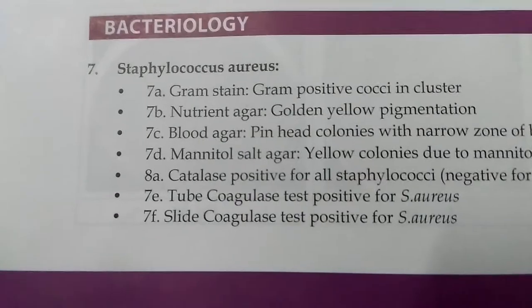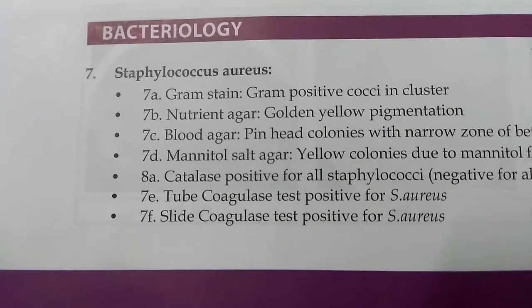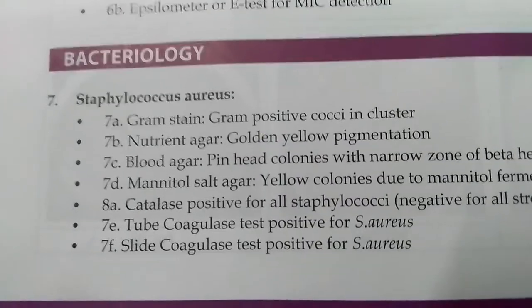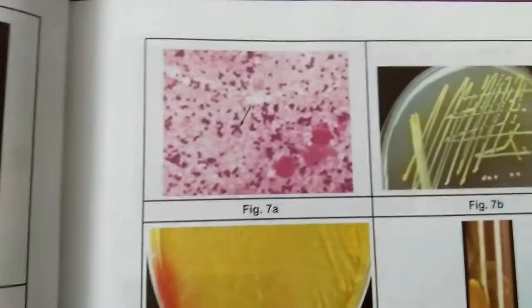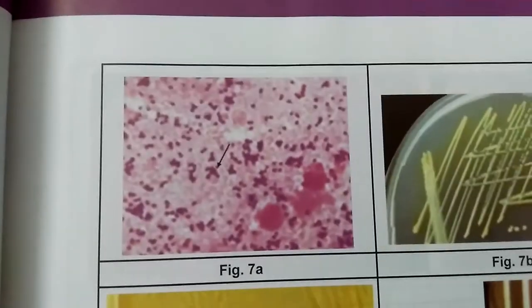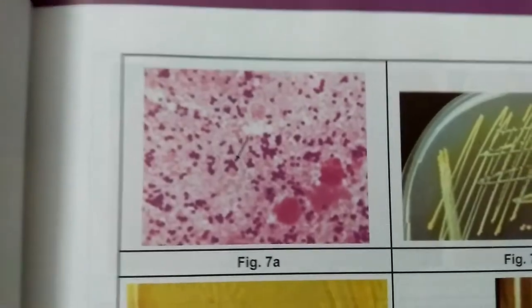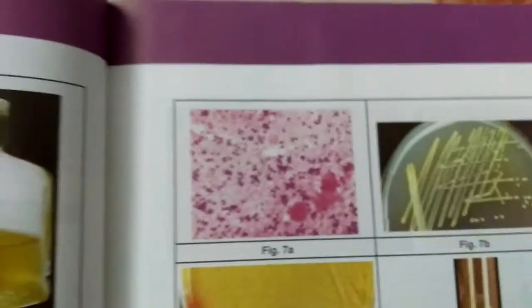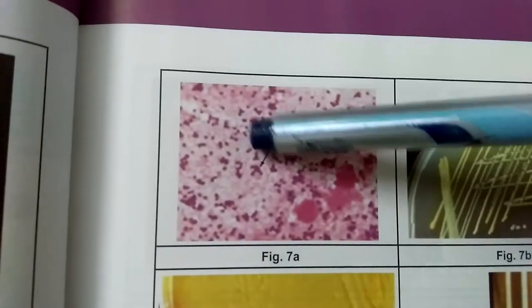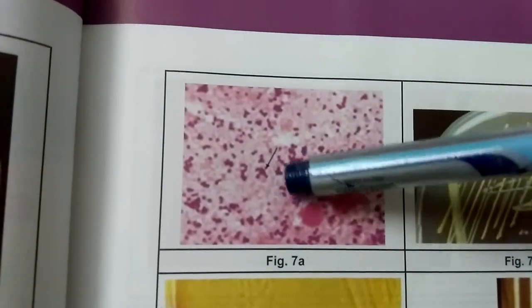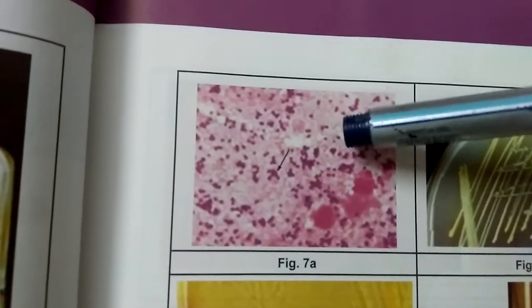The first image, 7a, is a Gram stain. Staphylococcus aureus is Gram-positive cocci in clusters. As you can see here, these are small clusters — these are clusters of Staphylococcus.